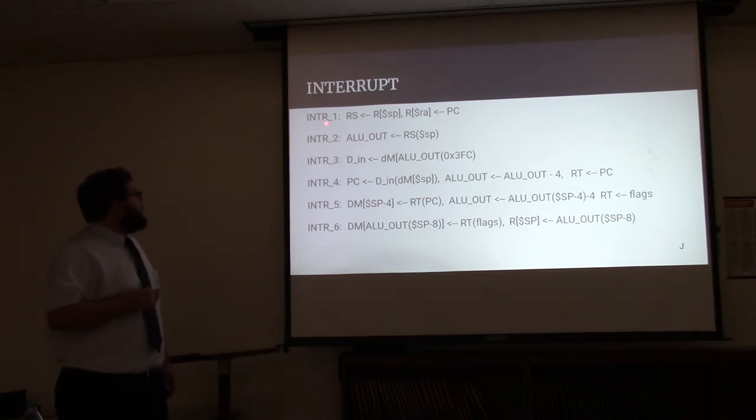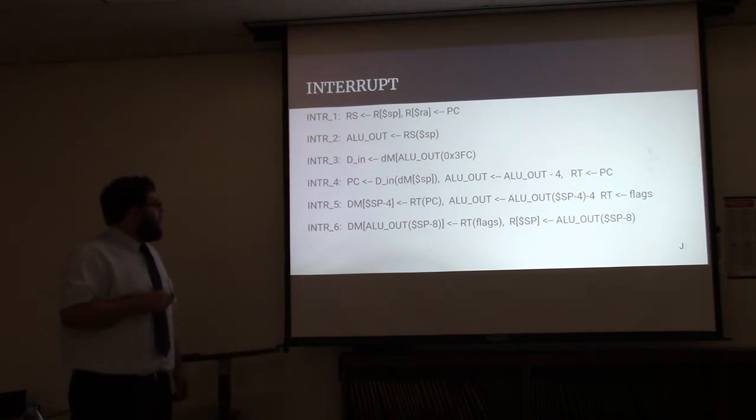The interrupt is handled in six main states with the stack pointer being put into the RS and then stuck into the ALU out in the next state. This value is then used to index data memory and is put into DN for the register file. At the next state, the program counter is then loaded with the stack pointer memory and ALU out gets the post-decremented value and RT gets the current program counter's value.